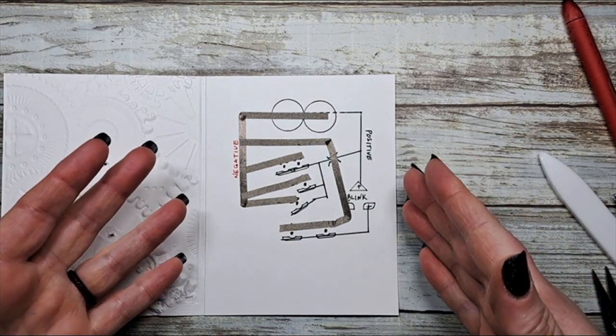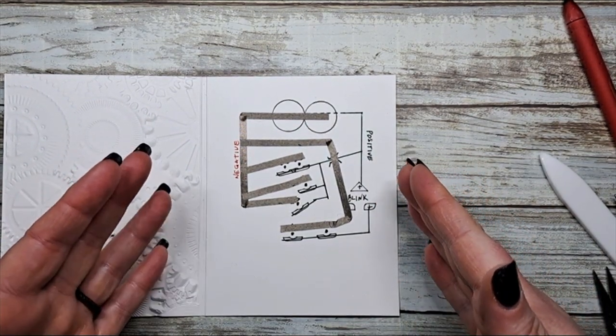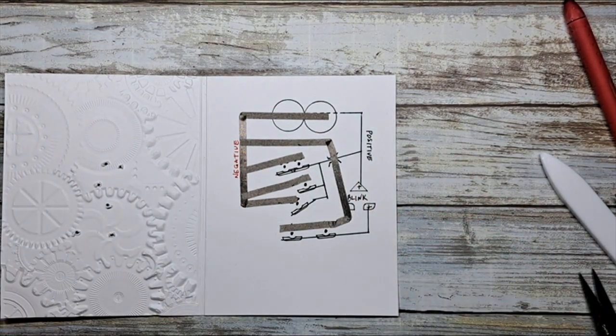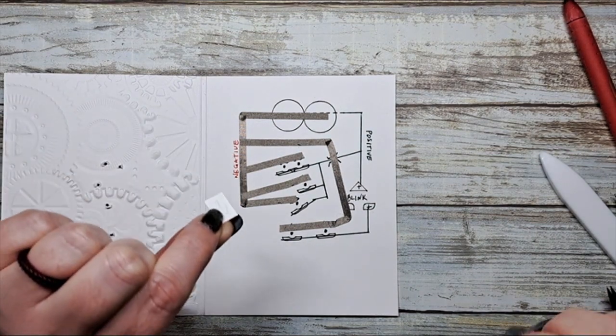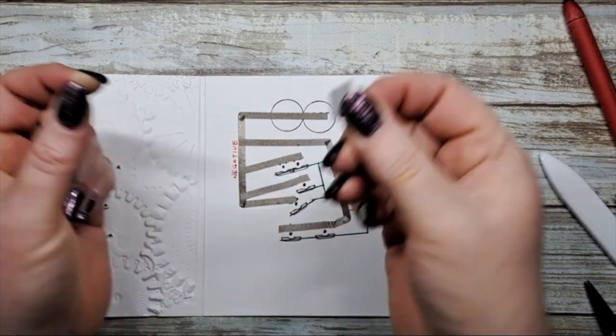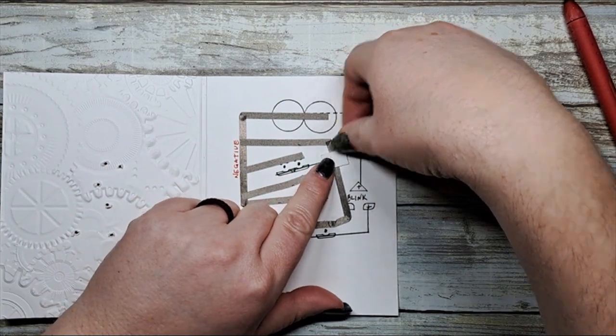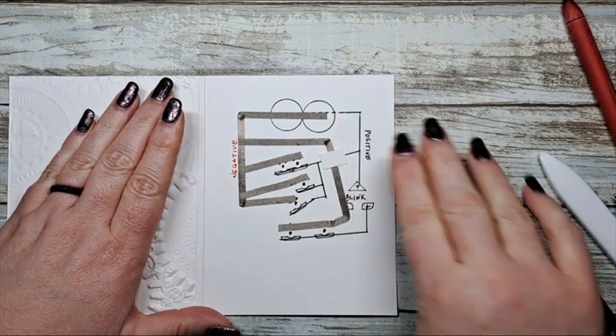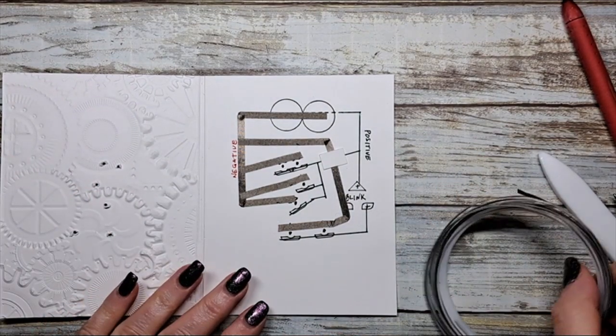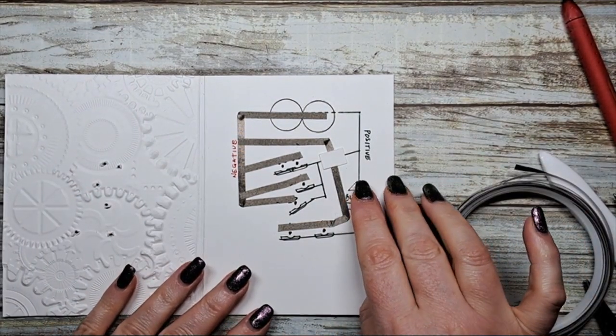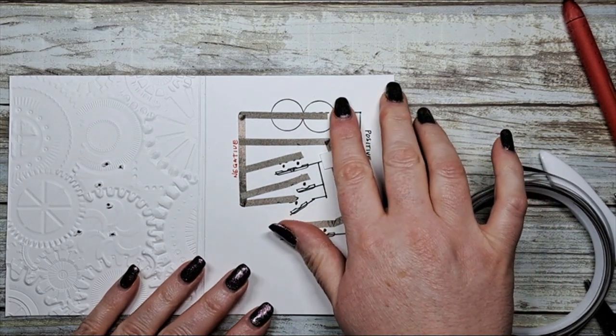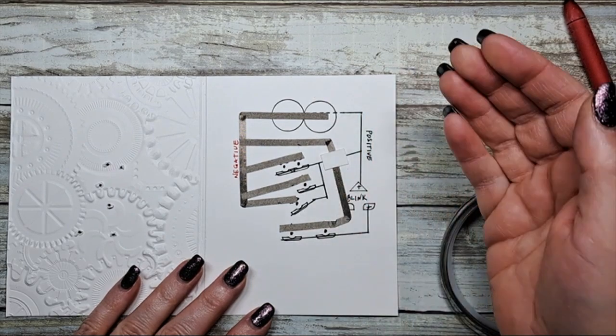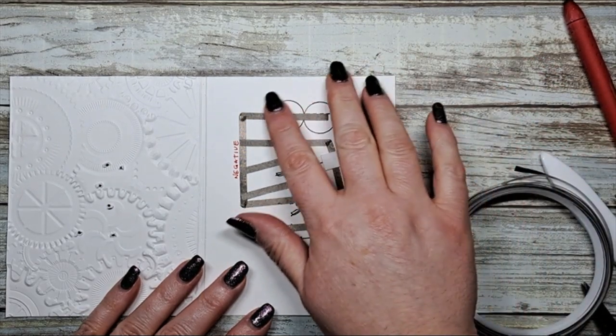And there we go, our negative side of our circuit is complete. Let's make that paper bridge before we go any further. So all your paper bridge is, is basically just a little scrap of cardstock glued into place. And there we go, now we can start the positive side.